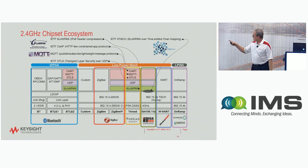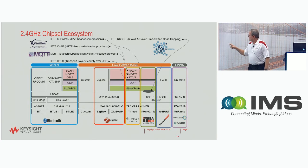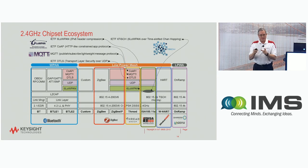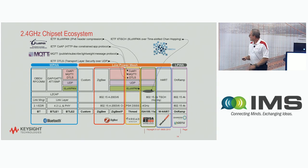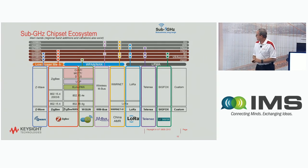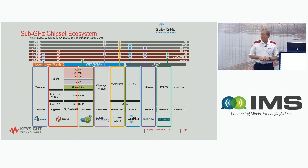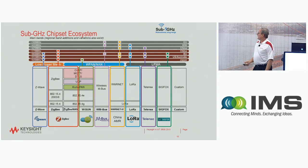There are sub-gigahertz bands and above a gigahertz. Above 2.5 gigahertz, generally it's very short-range, low-power applications. And then below 1 gigahertz, this is generally longer range, still low power — something like utility meter reading.